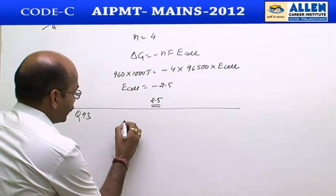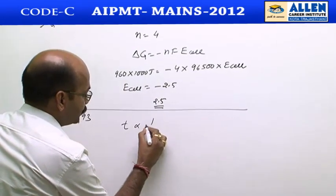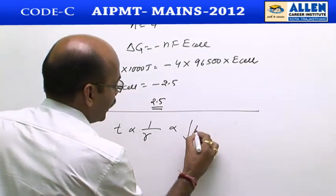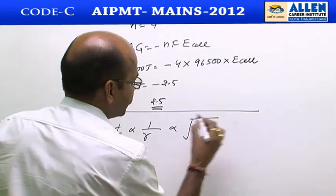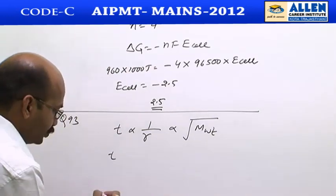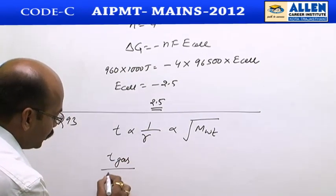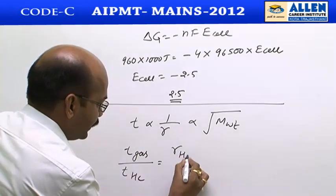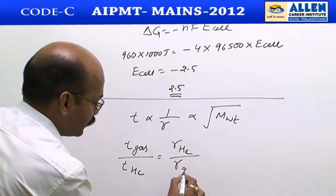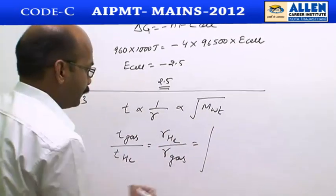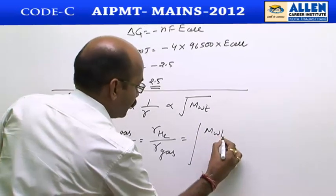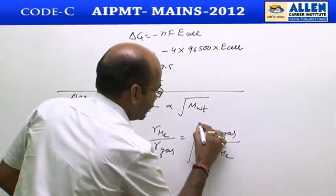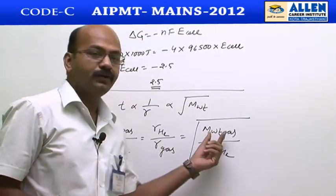As we know, time taken to diffuse is inversely proportional to rate of diffusion, which is inversely proportional to the square root of molecular weight. It means time of gas divided by time of helium equals rate of helium divided by rate of gas, which equals the square root of molecular weight of gas divided by molecular weight of helium.